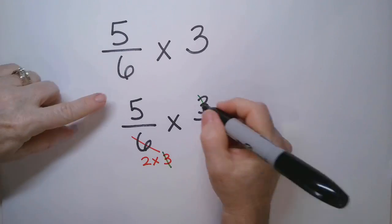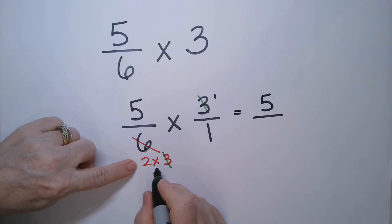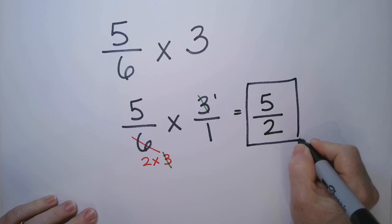So I am left with 5 times 1, which is 5. And on the bottom, I'm left with 2 times 1, which is 2. So I have 5 halves.